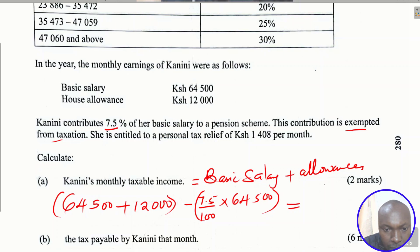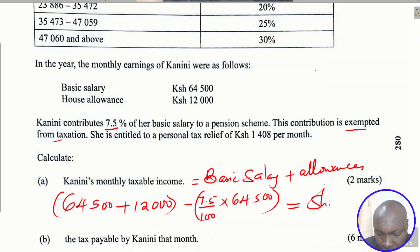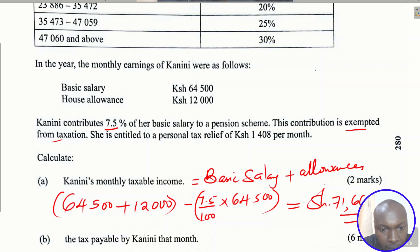Working this out: 64,500 plus 12,000 minus 7.5 divided by 100 multiplied by 64,500. This gives 71,662.50 shillings. That is the taxable income for Canini.